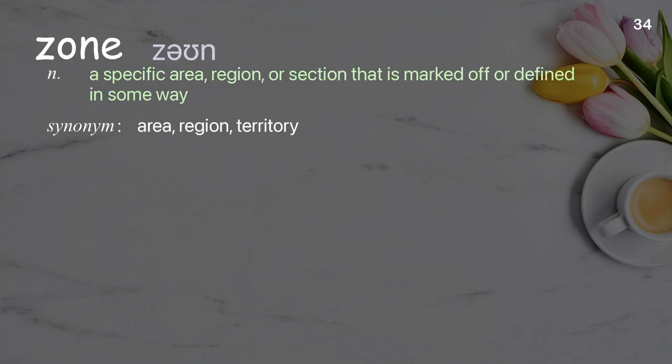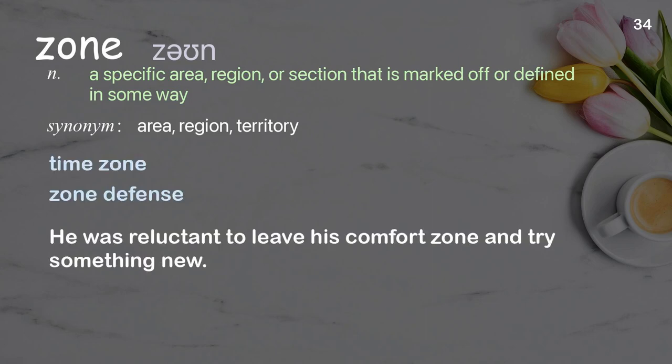Zone: A specific area, region, or section that is marked off or defined in some way. Examples: time zone, zone defense. He was reluctant to leave his comfort zone and try something new.